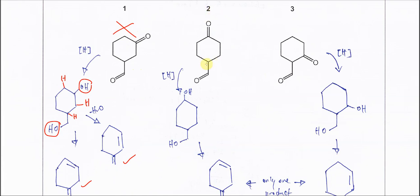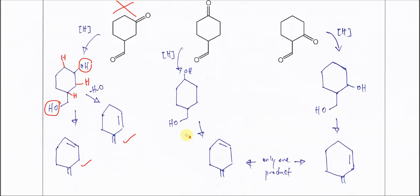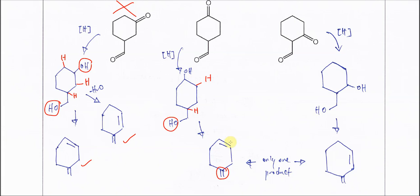For the second compound, after reduction, this ketone forms a secondary alcohol and this aldehyde forms a primary alcohol. After dehydration, this OH is removed with this H to form a C=C double bond. For the other OH, the two adjacent hydrogens are equivalent, so removing either one gives the same compound — only one product. Therefore the second compound is the answer.